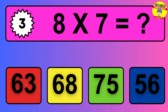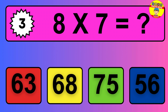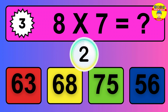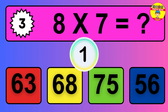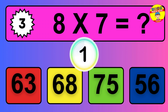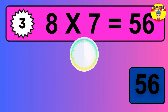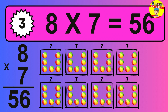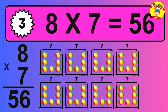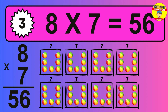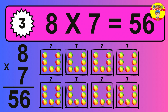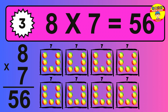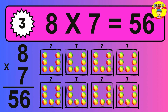Question 3. 8 times 7 equals what? So the answer is 8 times 7 is 56. To calculate, we have 8 groups with 7 balls each one. So how many balls do we have? 56 balls.